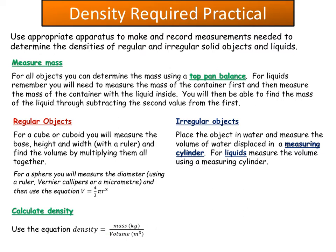To measure the mass of an object, you would use a top pan balance. For liquids, you need to measure the mass of the container first, then measure the mass of the container with the liquid inside. You find the mass of the liquid by subtracting the mass of the empty container from the mass of the container with the liquid.